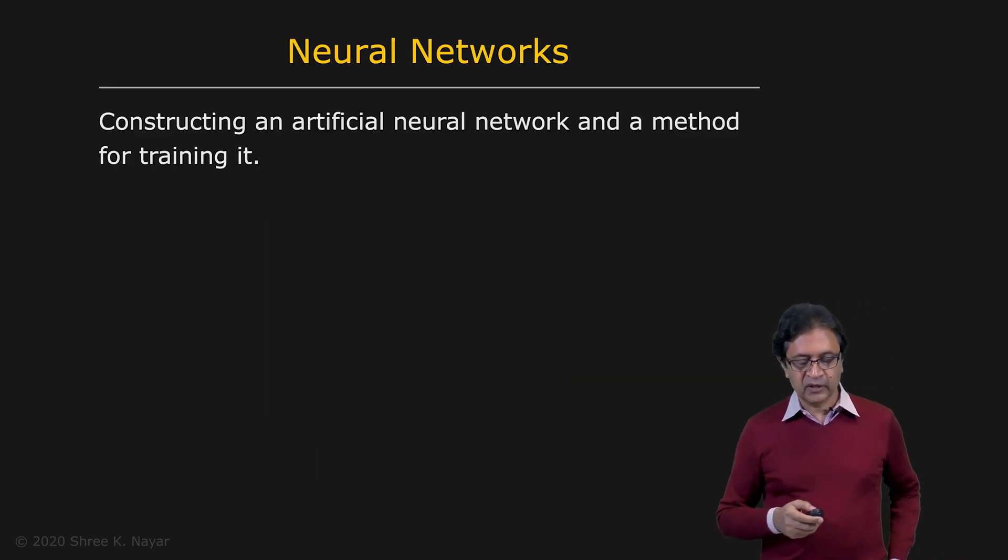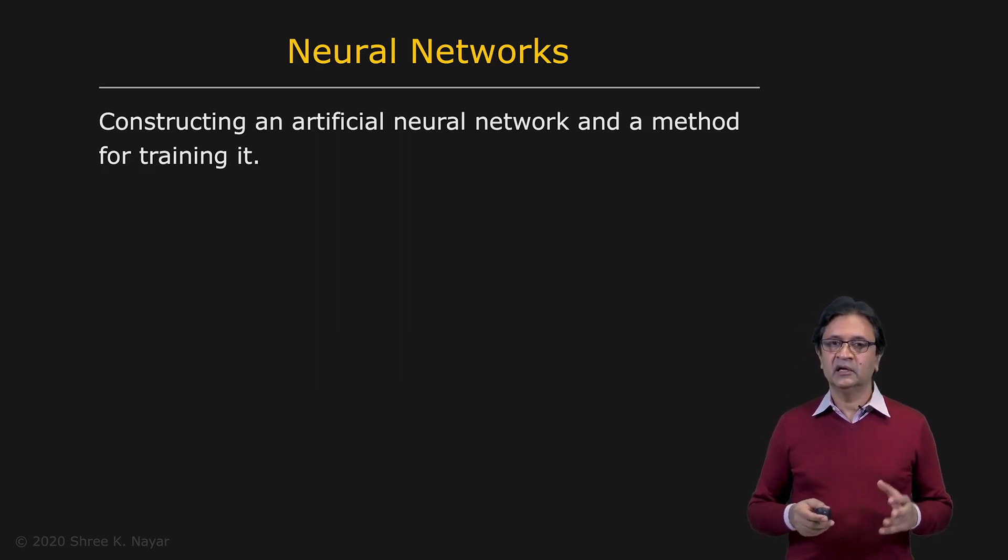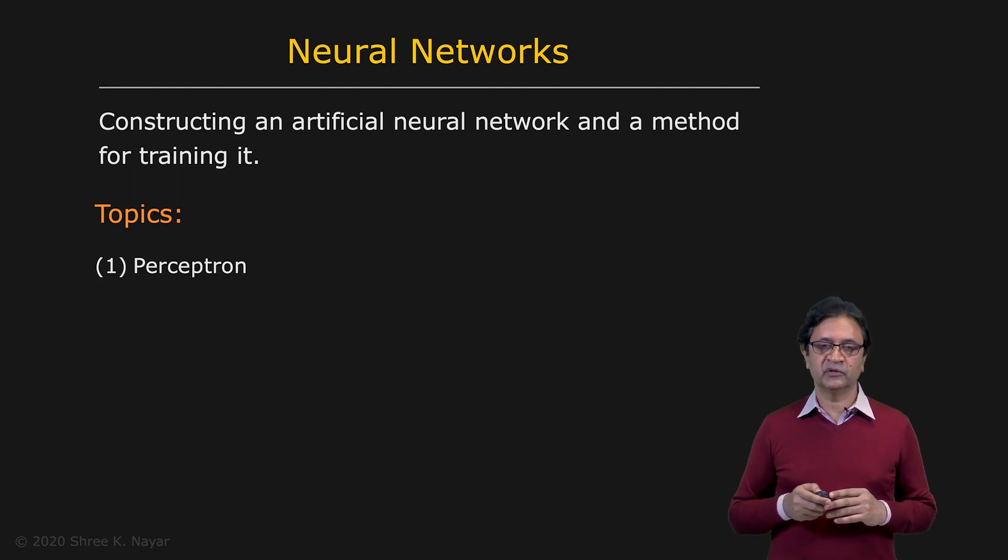So we're going to talk about how we construct an artificial neural network. And most importantly, given a task, how do we train such a network to perform that mapping? We're going to start by talking about a very simple type of neuron, which is called the perceptron. And we'll show that what a perceptron is really doing is behaving like a linear classifier.